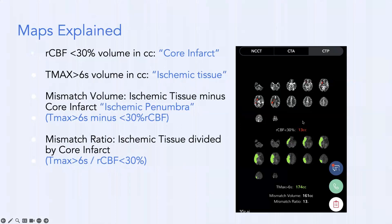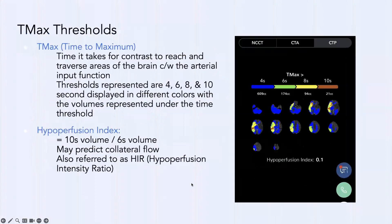Looking at a sample patient: CBF <30% (surrogate for core infarct) is 13 cc's; Tmax >6 seconds (ischemic tissue) is 174 cc's; mismatch volume (ischemic penumbra) is 161 cc's; mismatch ratio is 13 — a very high therapeutic ratio, making this a good candidate for thrombectomy. On the app, thresholds of four, six, eight, and ten seconds are provided; we generally use Tmax >6 seconds for acute ischemic tissue.